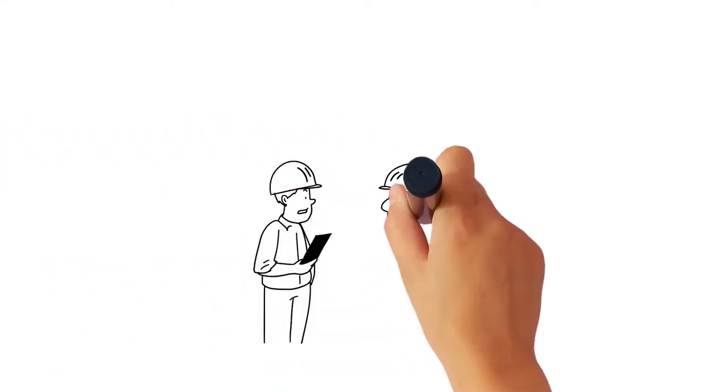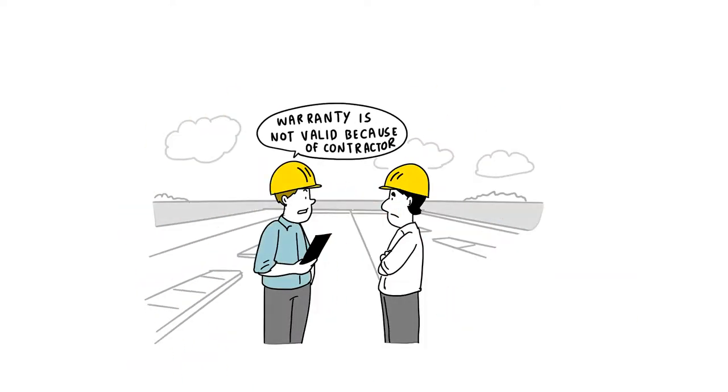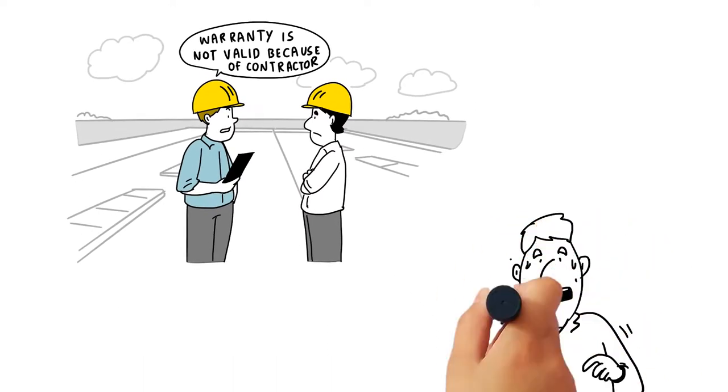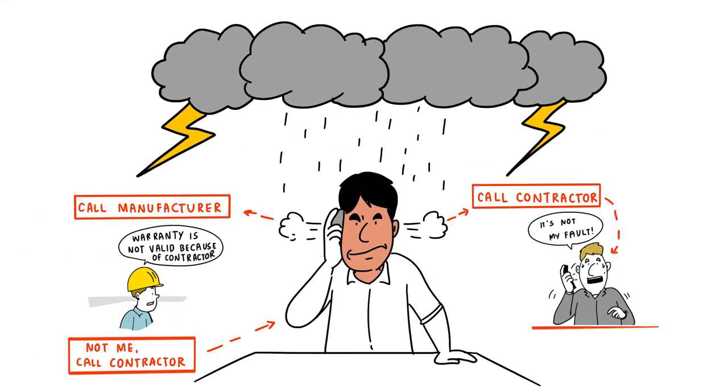Upon calling the manufacturer, they came out to inspect the roof and determined the warranty was not valid due to contractor workmanship issues. Mike then called his contractor who denied any responsibility citing the manufacturer's warranty. Poor Mike was stuck in the middle.